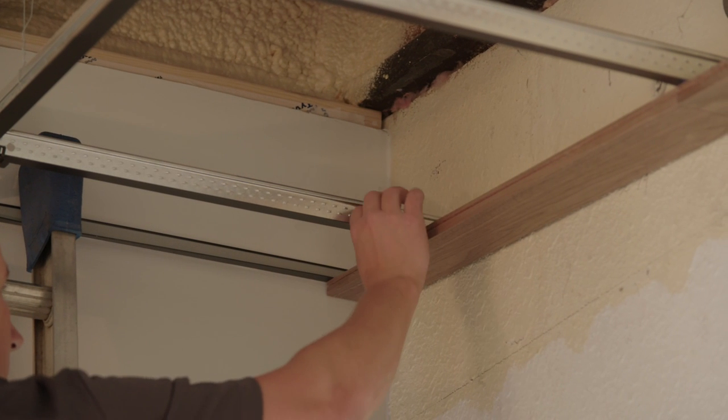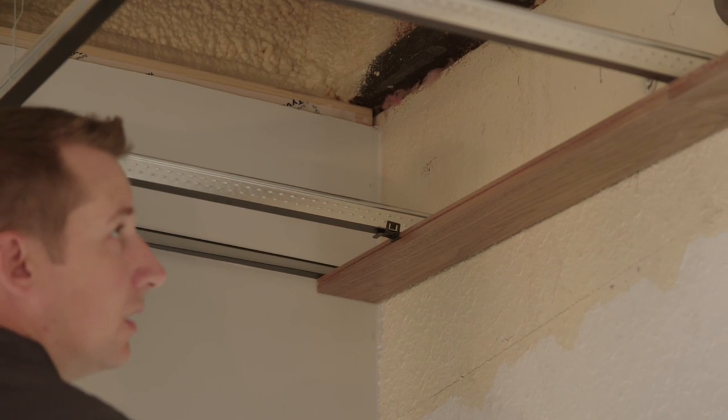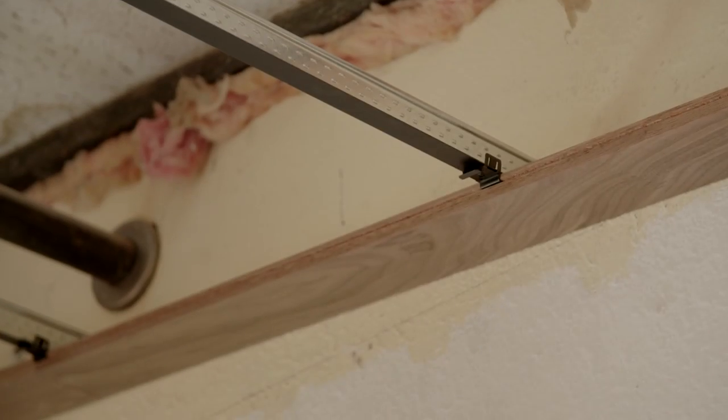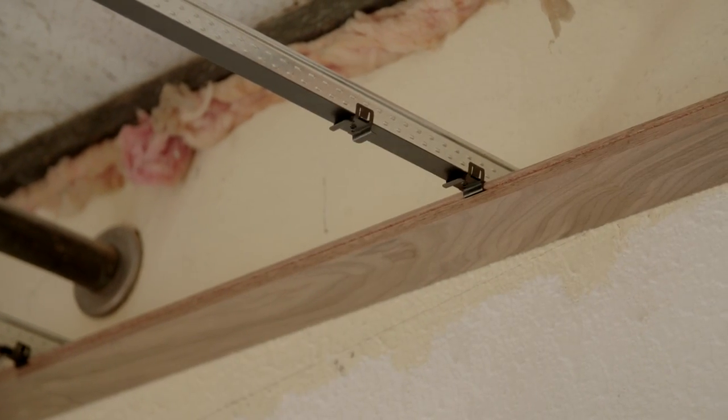Add the mounting clips for the next row of planks. These clips hold the planks and set the side reveal width. Place the clips for both sides of the plank row.